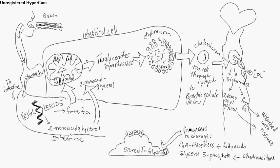Now, there are precursors for storage of triglycerides in the adipose tissue. The CoA thioesters, which come from fatty acids, and the glycerol 3-phosphate, which comes from the dihydroacetone. And this comes from the glycolysis pathway.